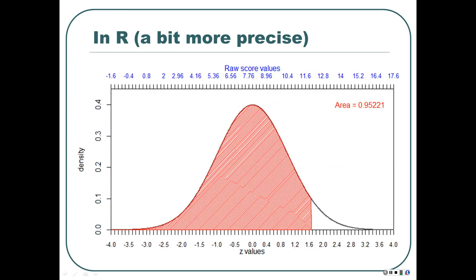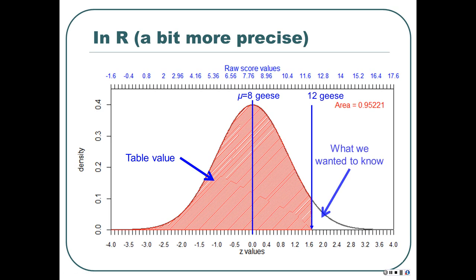In R we can be more precise. We can calculate and find that the area above is actually 0.95221 below, and 1 minus will give us a different value. The table value gives us the area below our z-score. For 1.67, the area below is 0.95 something, and the area above is about 0.05 something — a little less than 0.05.